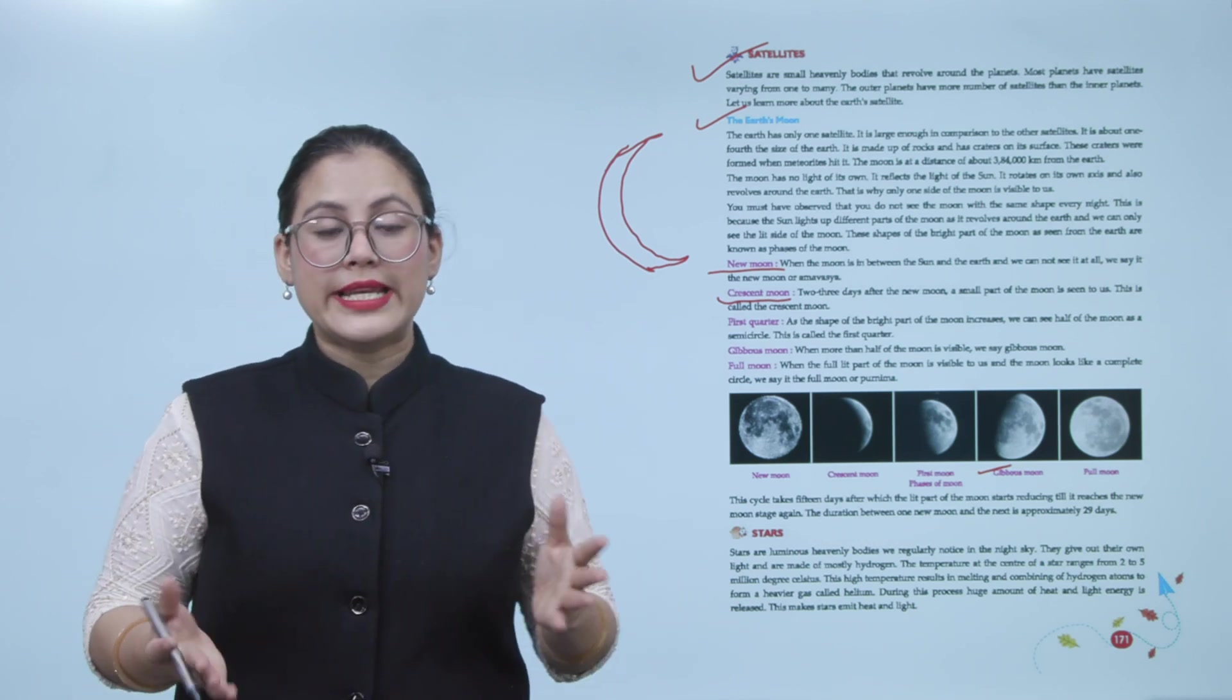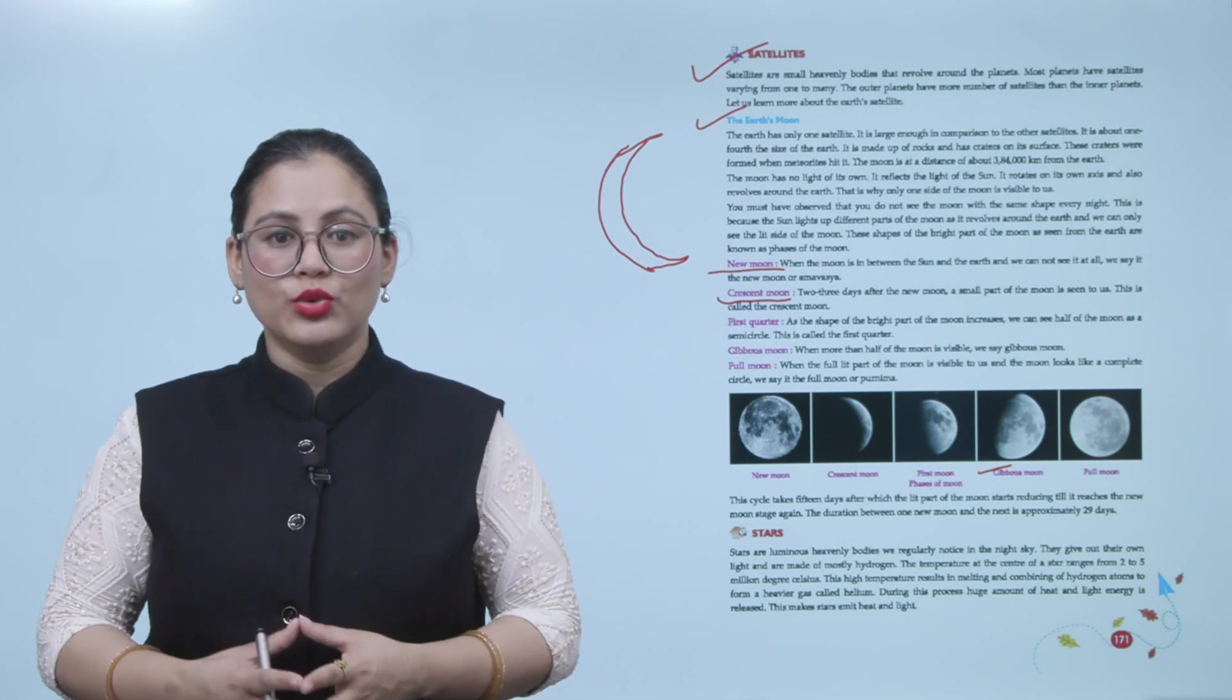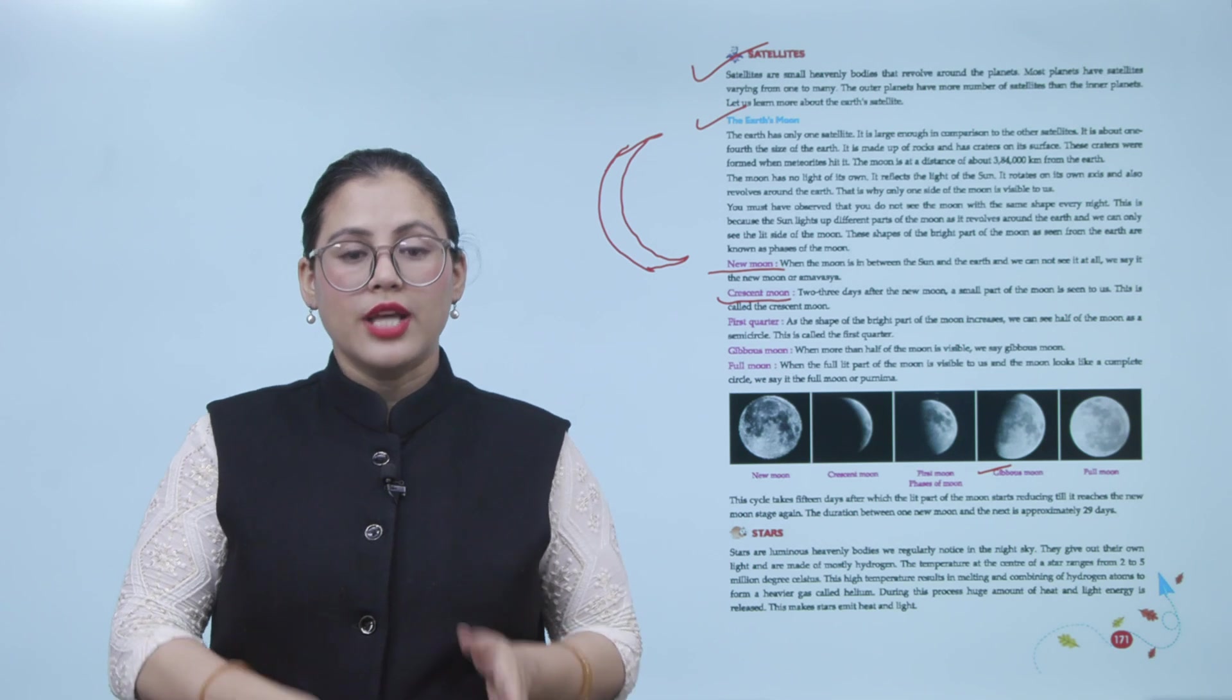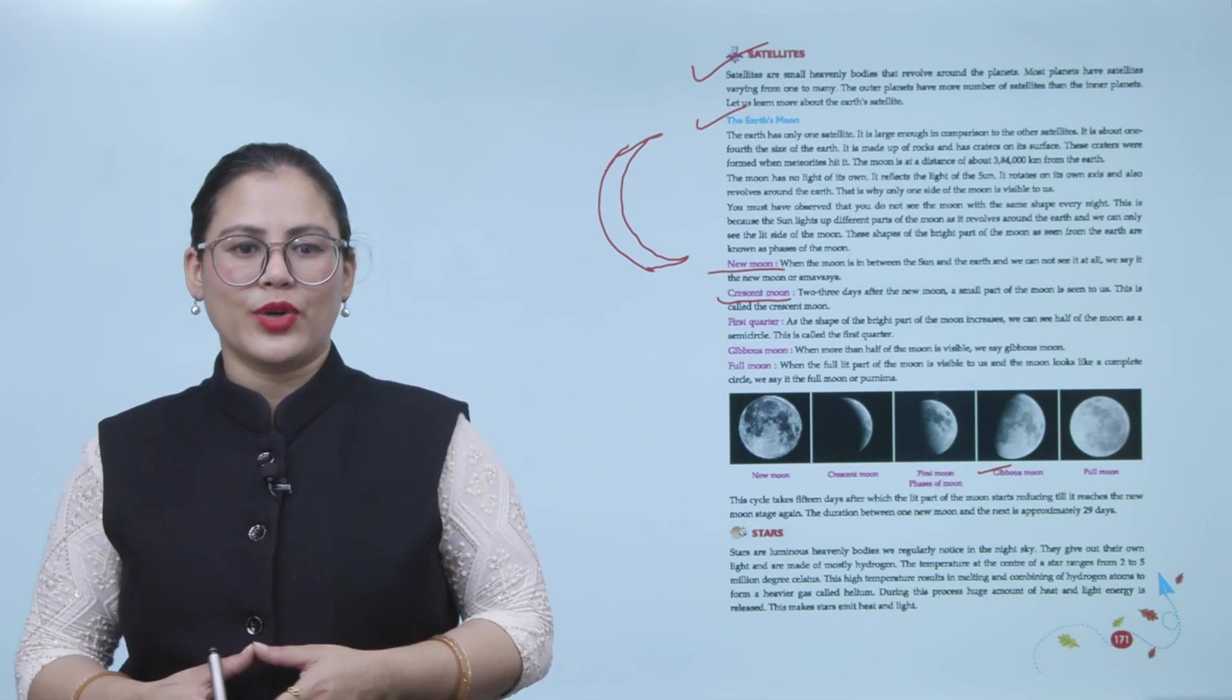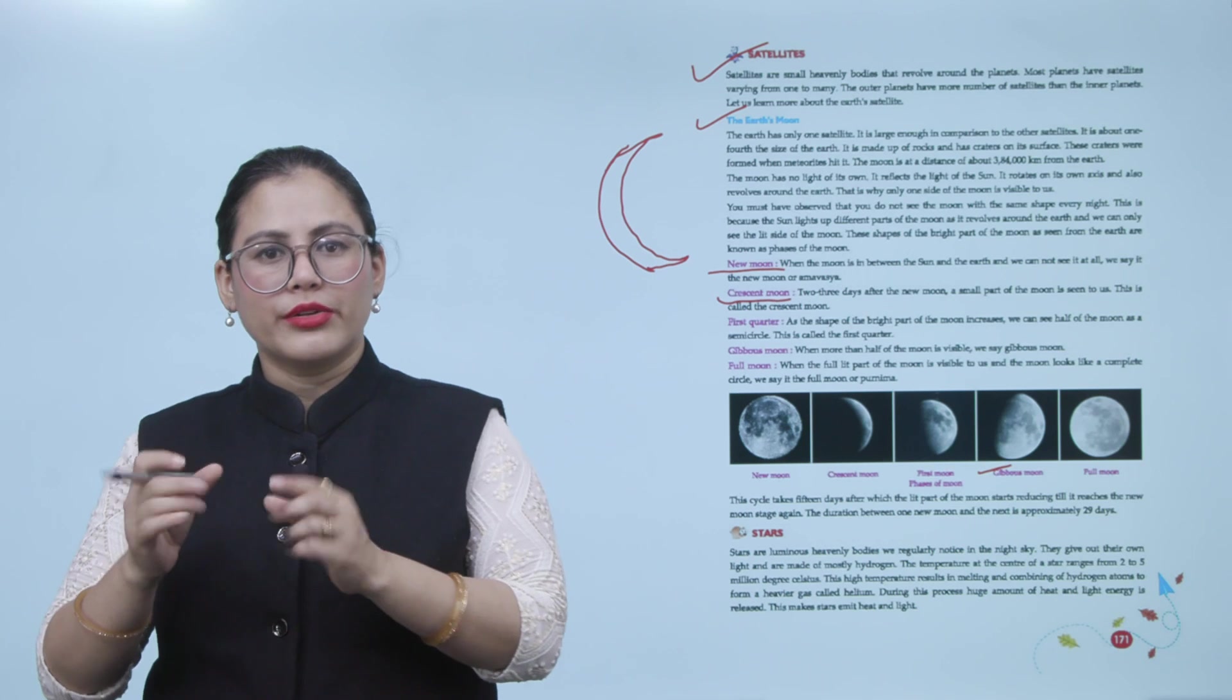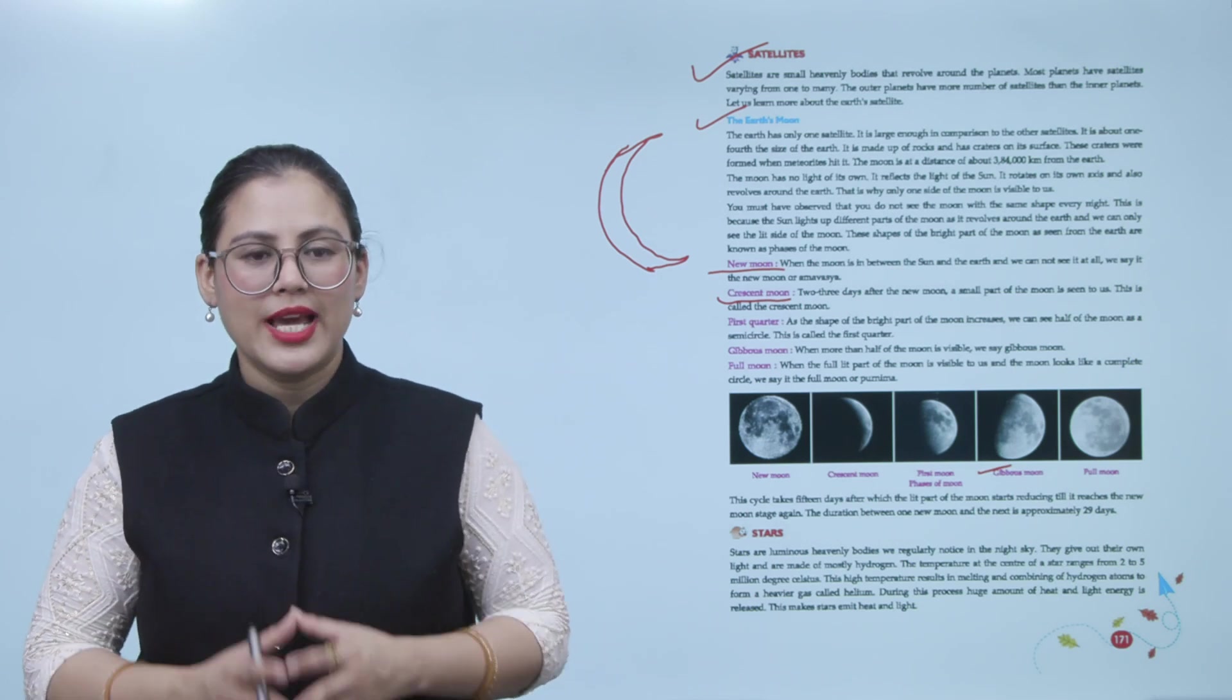And full moon. When the full lit part of the moon is visible to us and the moon looks like a complete circle, we say it's the full moon, or Purnima. The cycle takes 15 days, after which the lit part of the moon starts reducing till it reaches the new moon stage again. The duration between one new moon and the next is approximately 29 days.